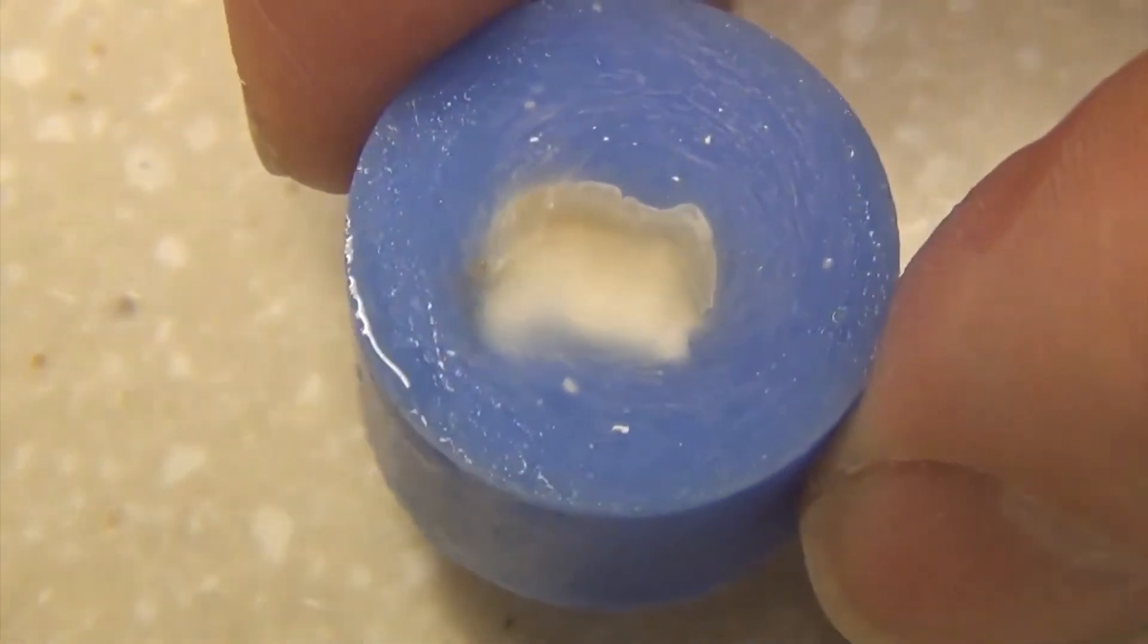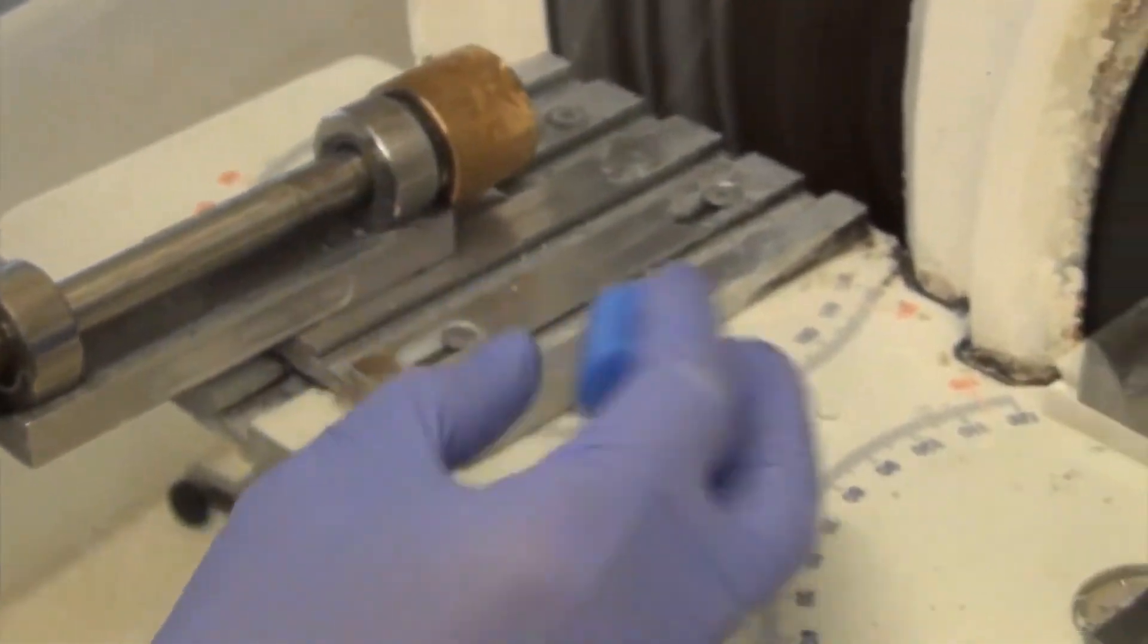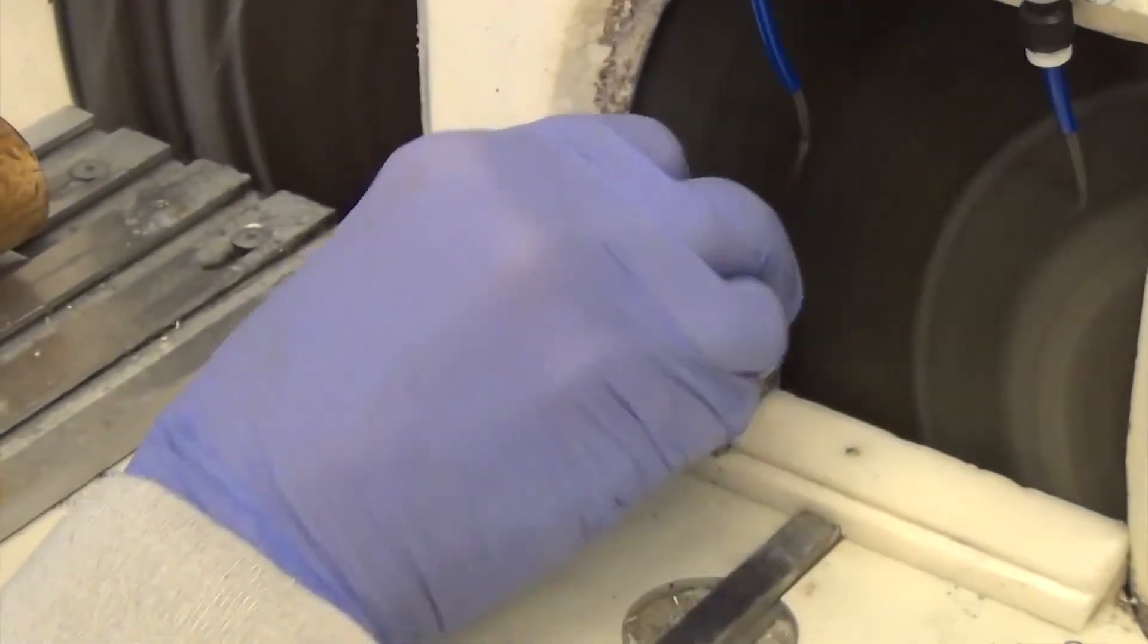Now we don't want to be bonding to enamel when we're trying to bond to dentin and we don't want to bond to dentin when we're trying to bond to enamel. So this is kind of a delicate balance of looking at what surfaces we want to bond to.